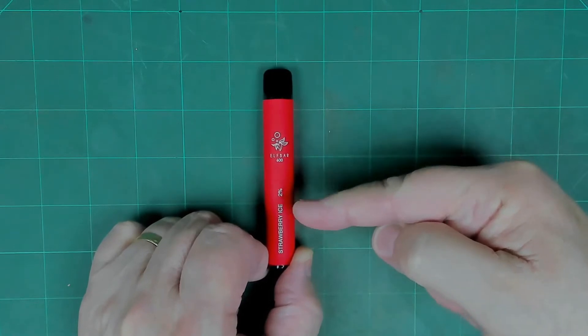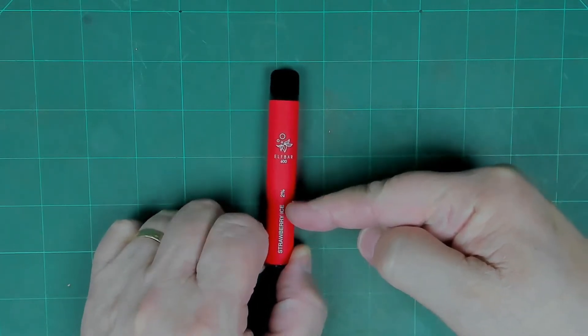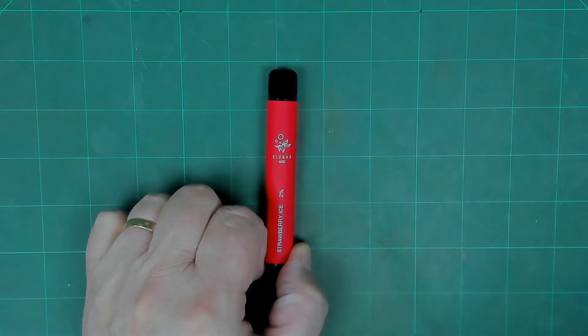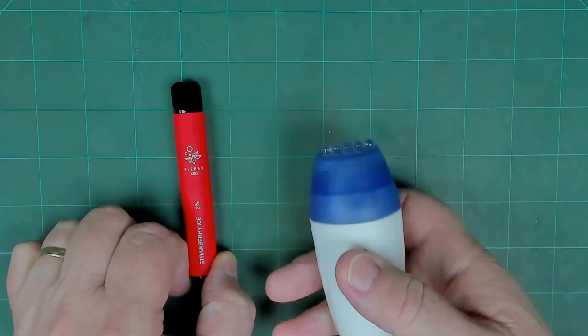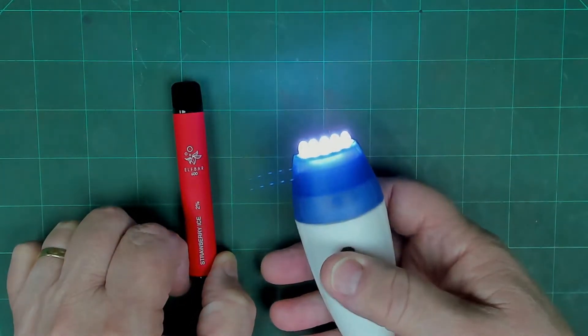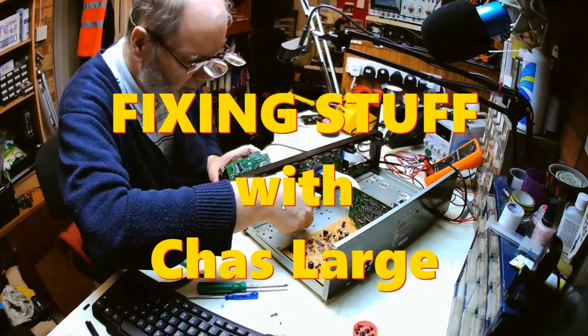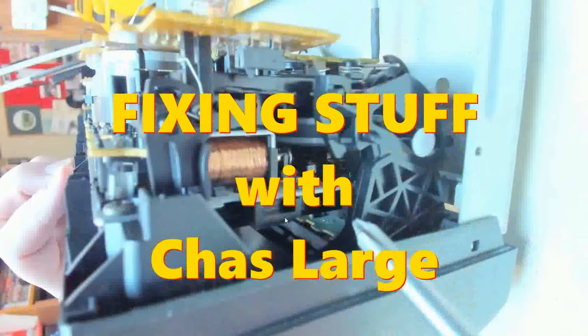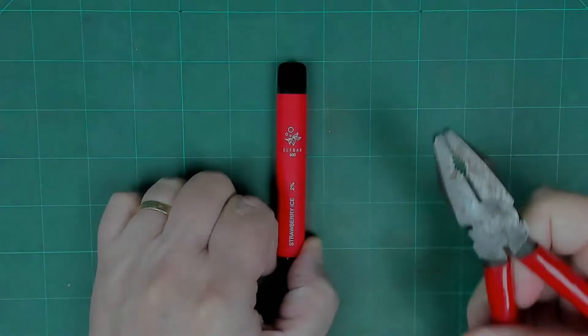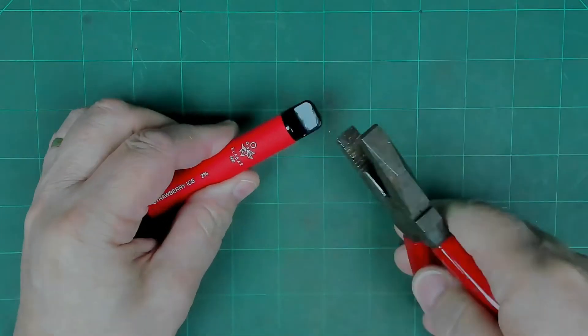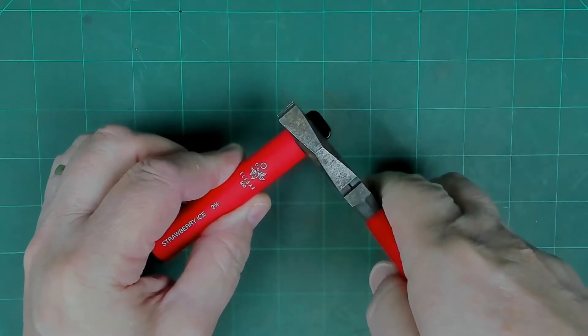Inside here is a rechargeable battery, and those rechargeable batteries can be used to make things like a rechargeable torch like that. Let's have a look inside. To get the insides out, we have to remove the suction part.